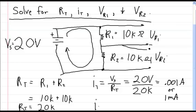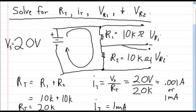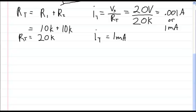So the total current is equal to 1 milliamp. Now that we've solved for that, we need to solve for the individual voltages.